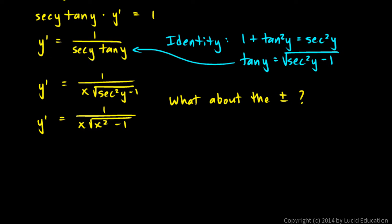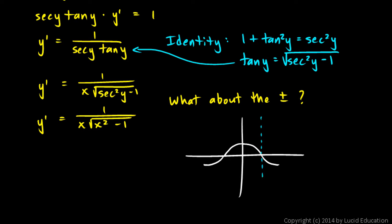To think about this, look at the graph. Remember what the secant function looks like — the secant function is the reciprocal of the cosine function. So the cosine function looks like this, and the secant function is going to look like this. We're going to have asymptotes here and here. That's the secant function. Let's erase the cosine function — that's our function secant x.